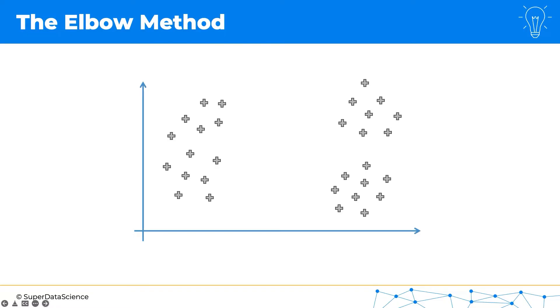So our data points are here and we already know how k-means clustering works. The question is, how do we decide how many clusters to select in that very first step? Because it's up to us. Well, the elbow method is one of the approaches to help you make this decision. There are other methods as well.